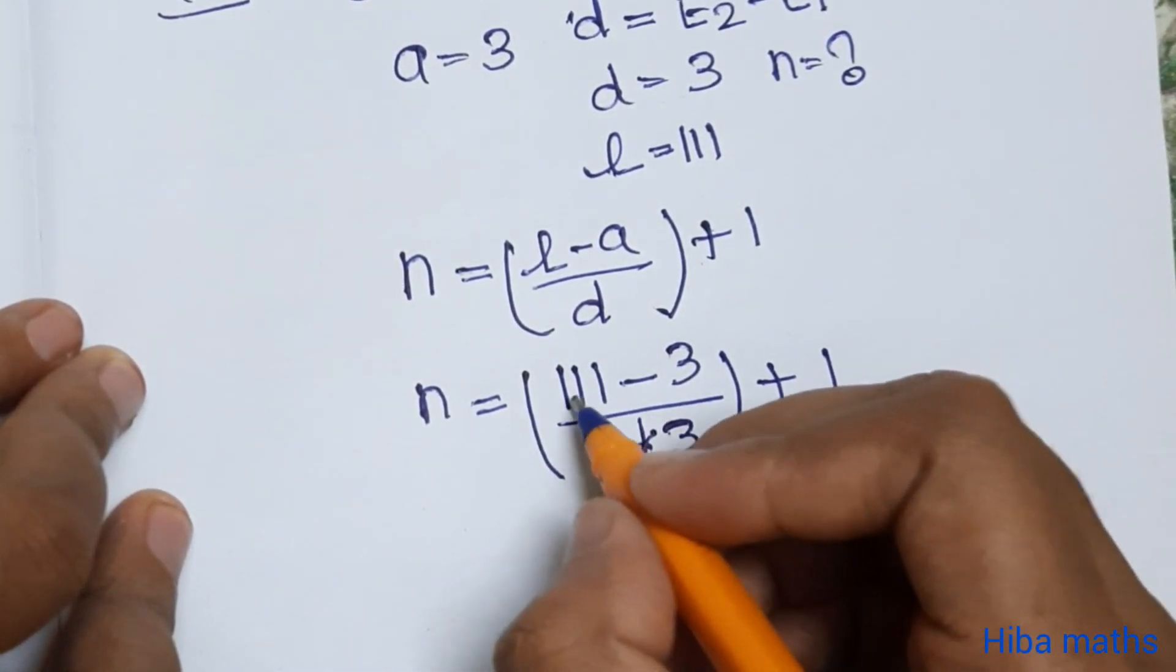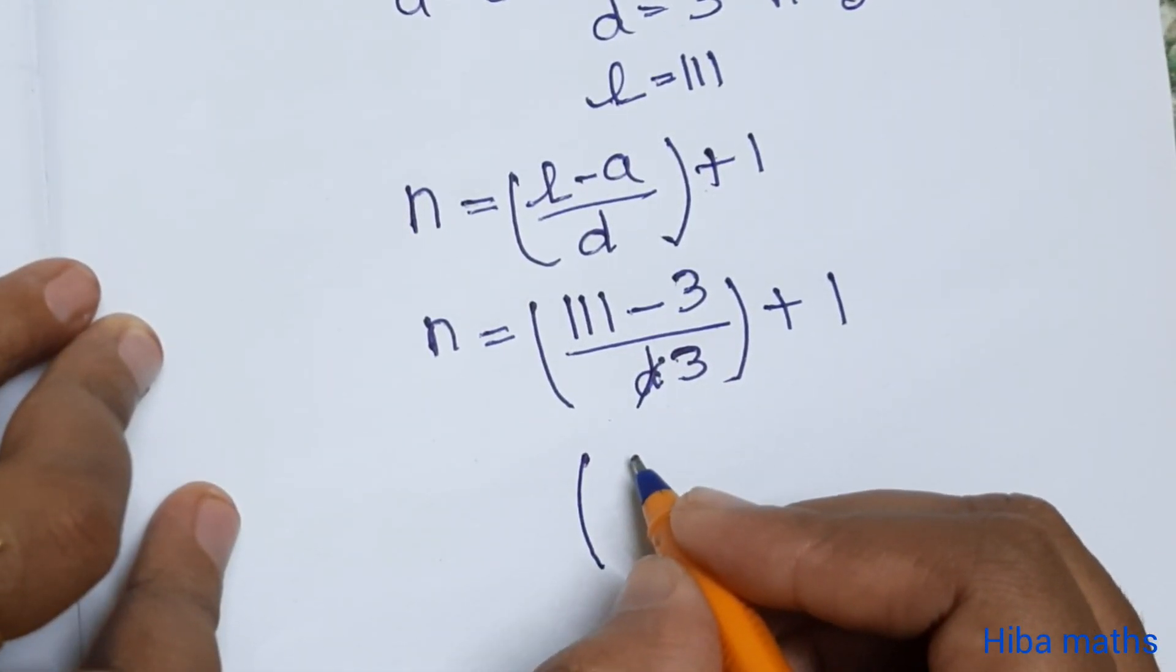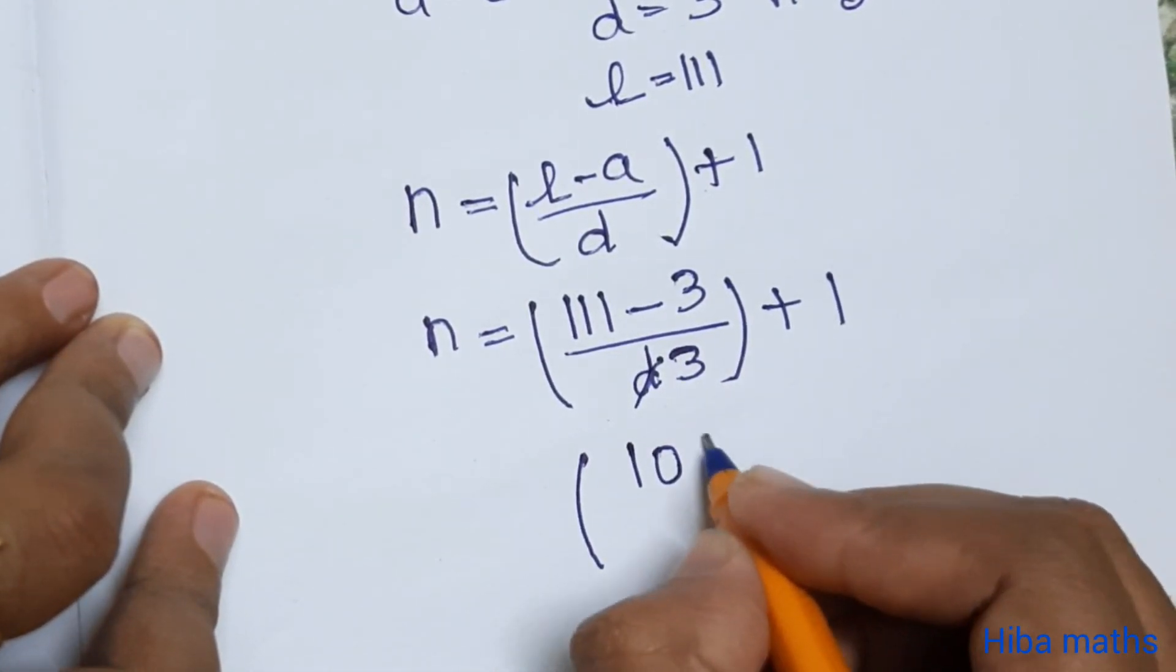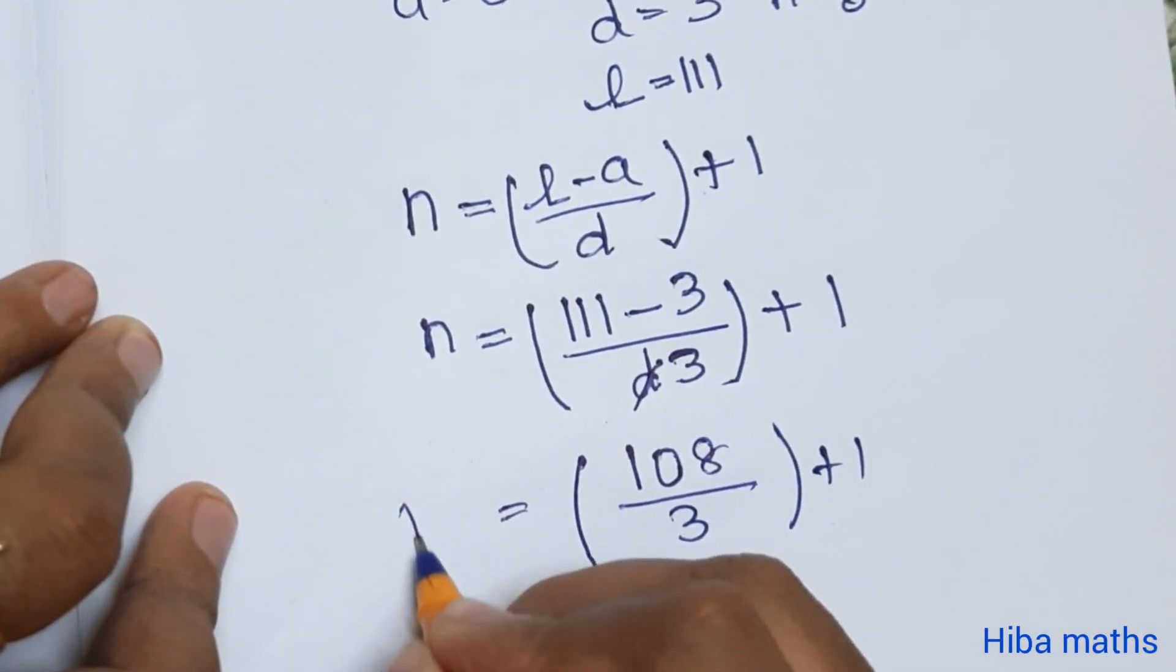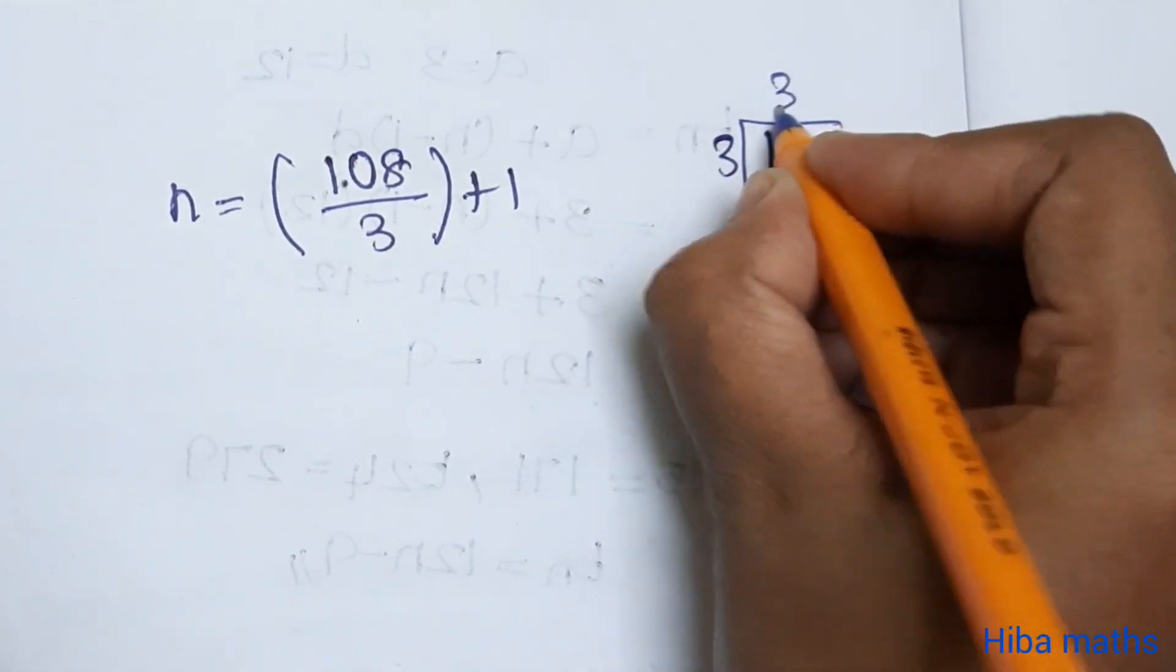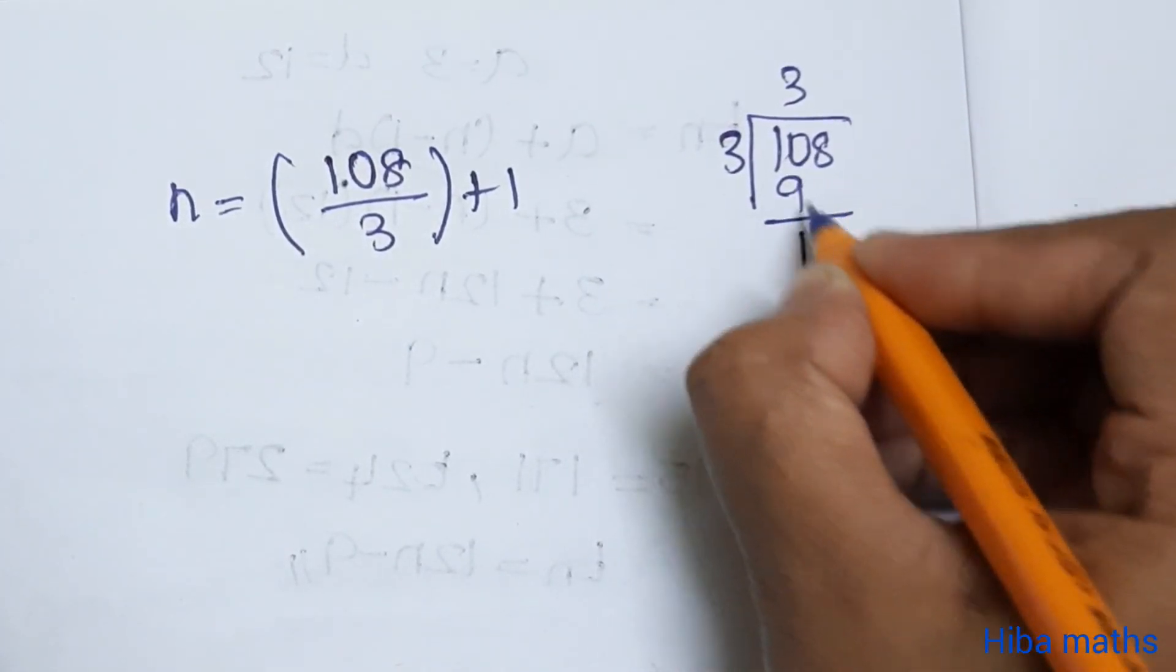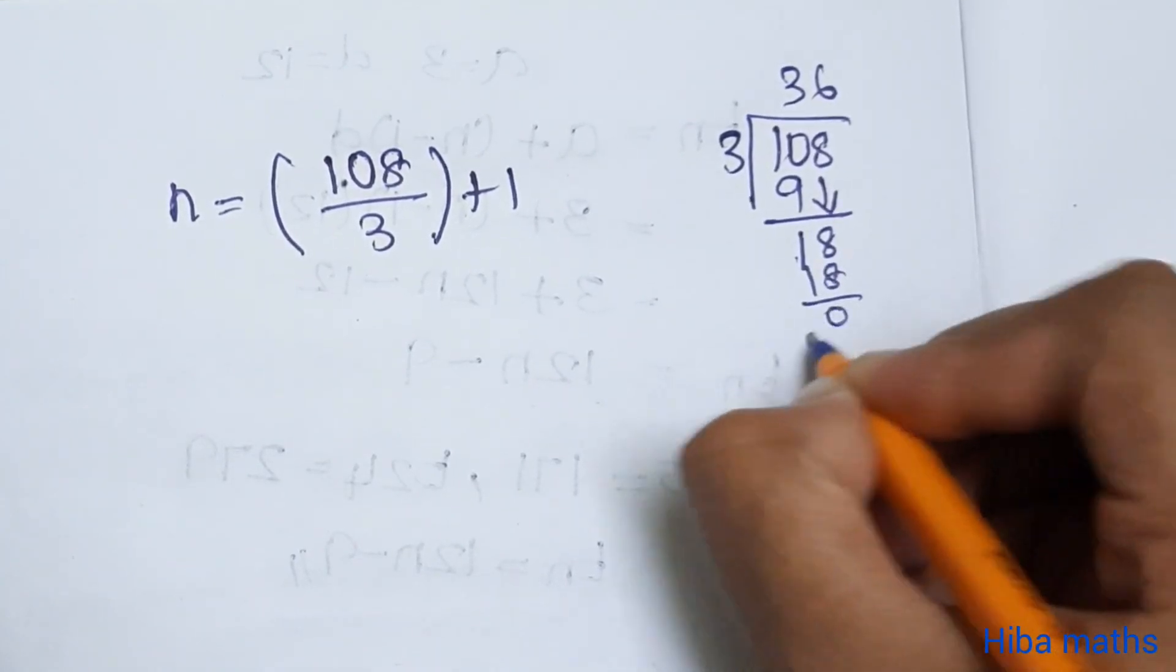We substitute: 111 minus 3 equals 108, divided by 3. Calculating 108 divided by 3: 3 goes into 10 three times, that's 9, balance 1. Bring down 8, 3 goes into 18 six times. So 36.